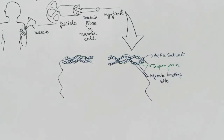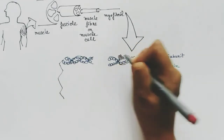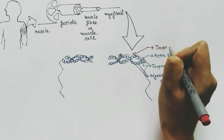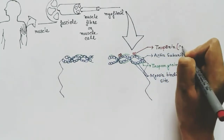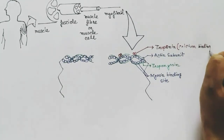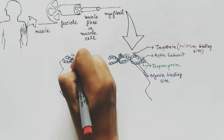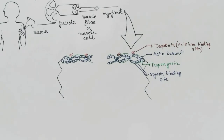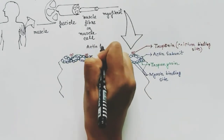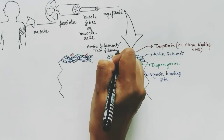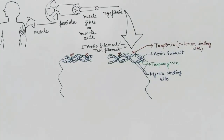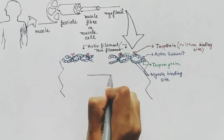The actin subunits have myosin binding sites which are covered by tropomyosin. These red structures are the troponin structures — they are the calcium binding sites of the muscle. Calcium can bind to the troponin during muscle contraction.